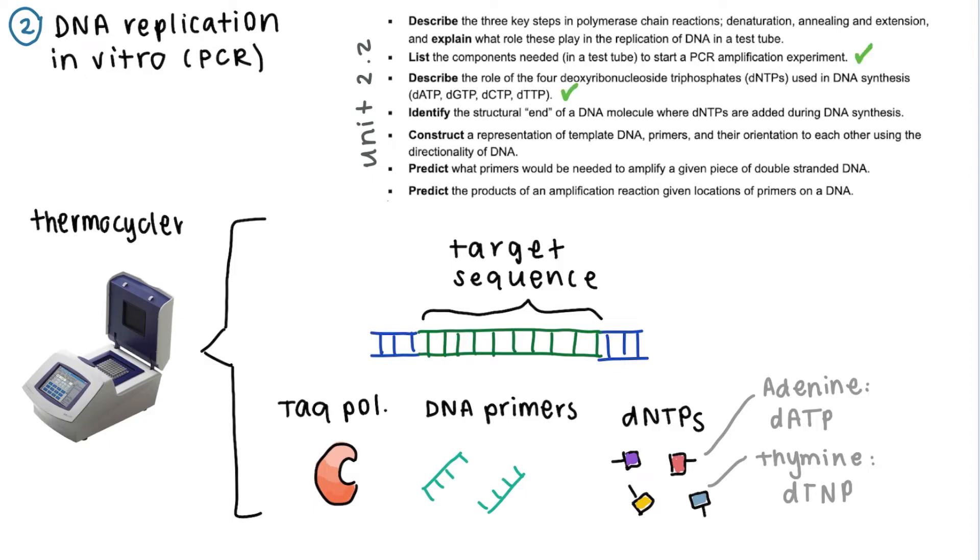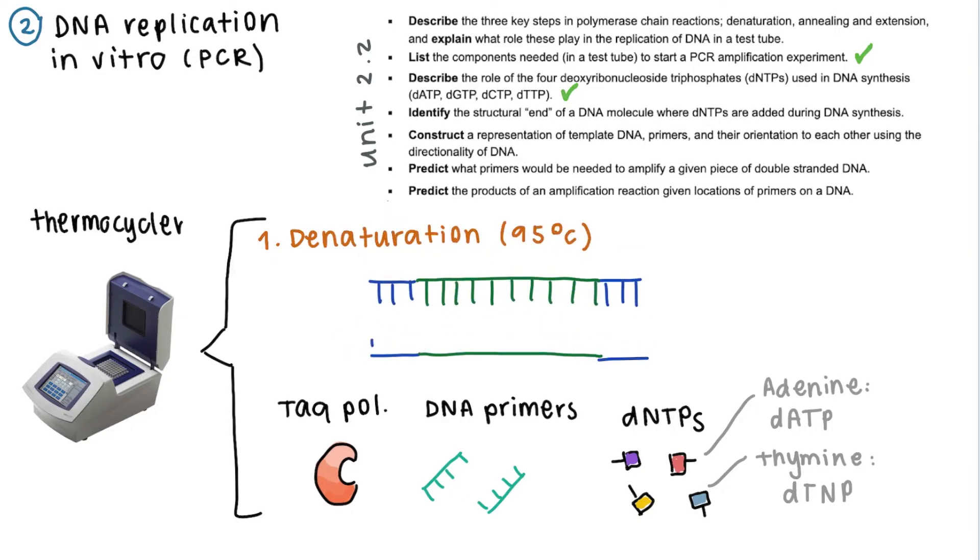The first step of PCR is denaturation, where the temperature is increased to 95 degrees Celsius. The temperature is increased because heat can break very strong bonds, and this is the case with DNA.